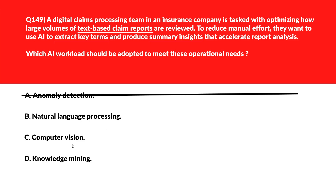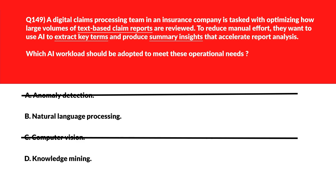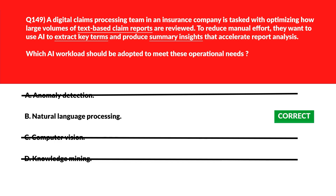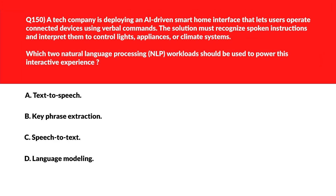Option C: Computer Vision analyzes visual inputs, but the claims reports here are stored as text files — wrong choice. Option D: Knowledge Mining helps organize information but doesn't generate summaries or extract terms from documents alone — wrong choice. The correct answer is option B: NLP, that is Natural Language Processing.